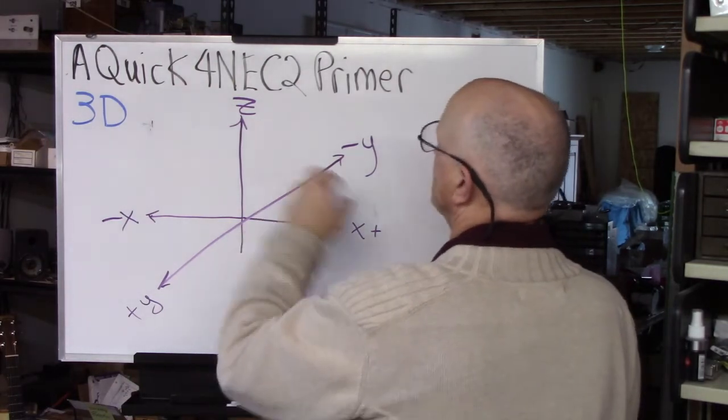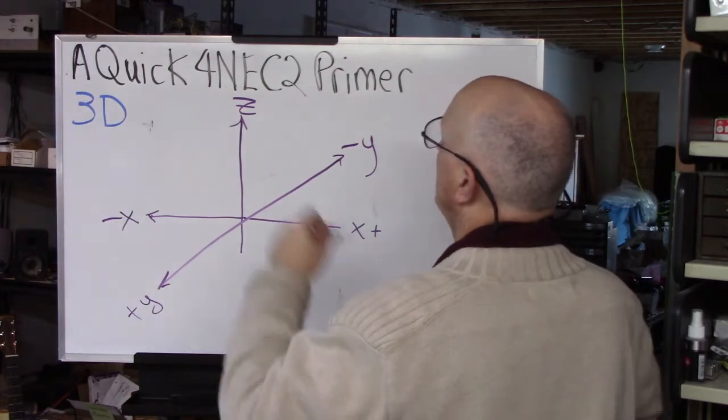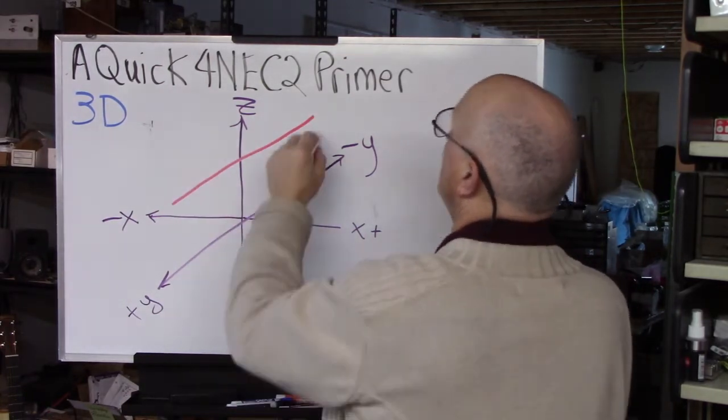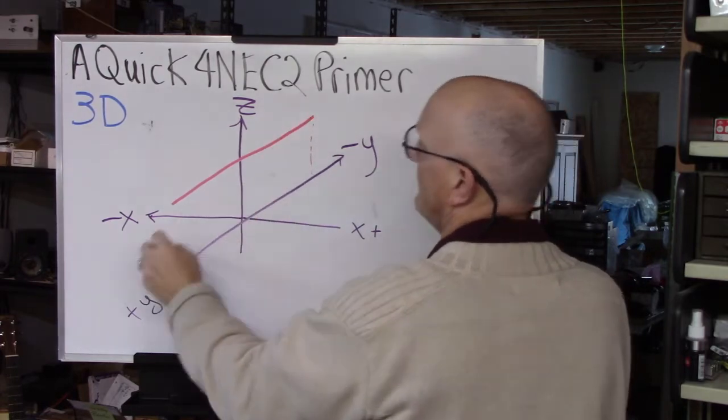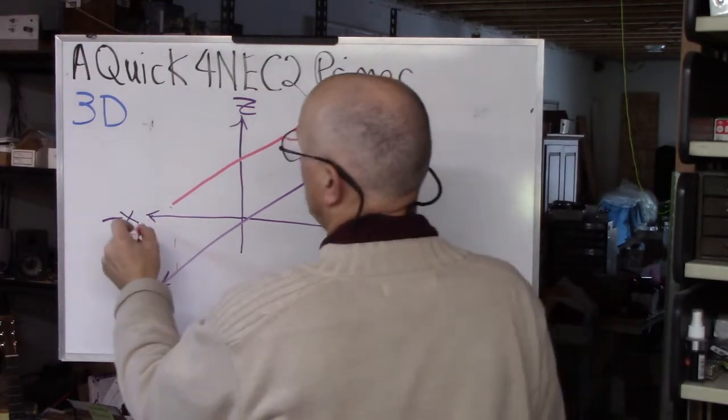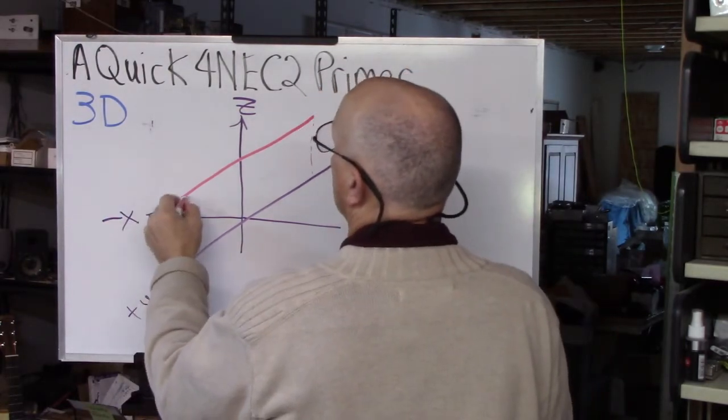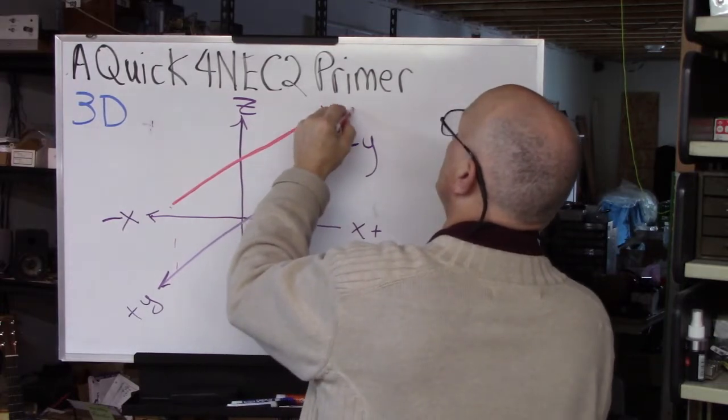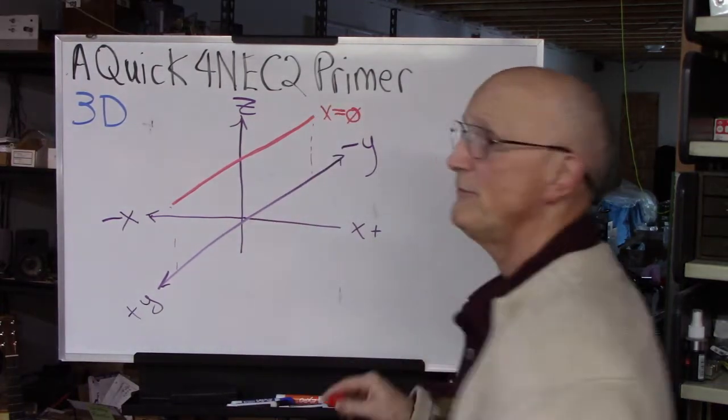So if we're going to model let's say a dipole and we plan our dipole this way so it's directly above the y-axis, then that means that for the entire length of this antenna X equals zero and we don't have to mess with anything.